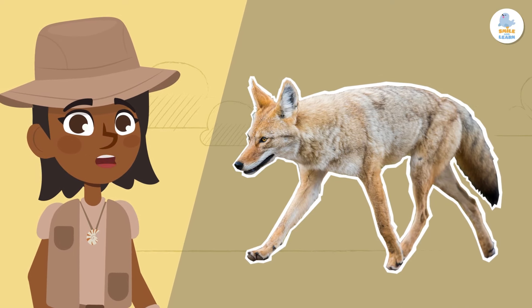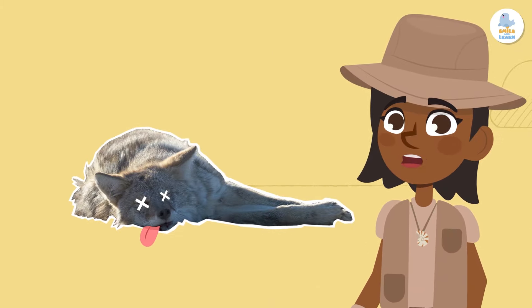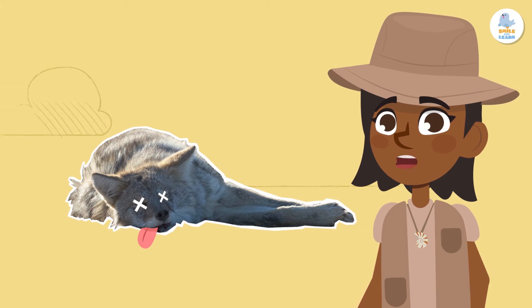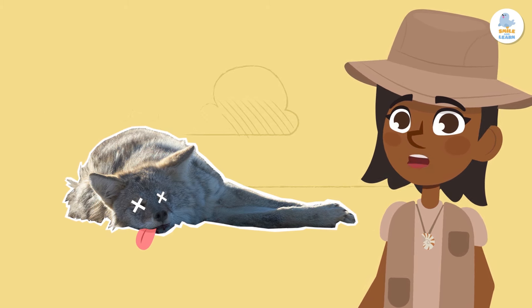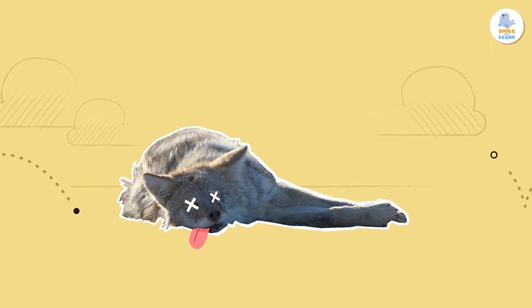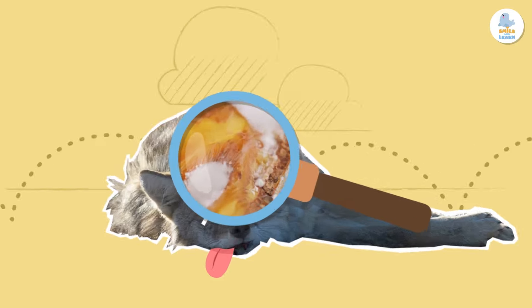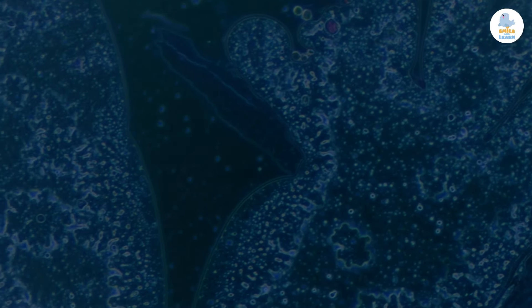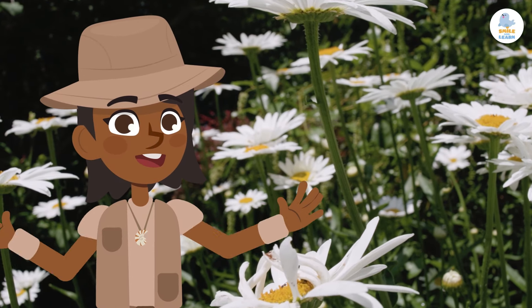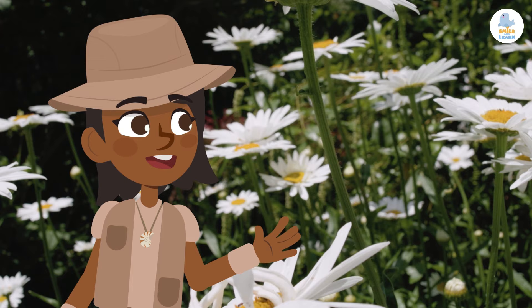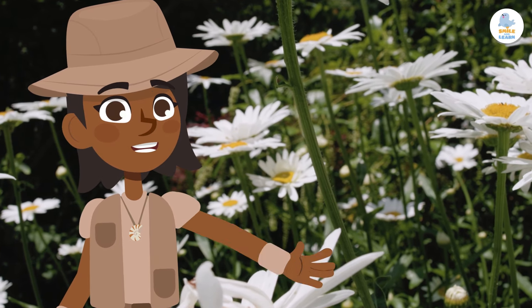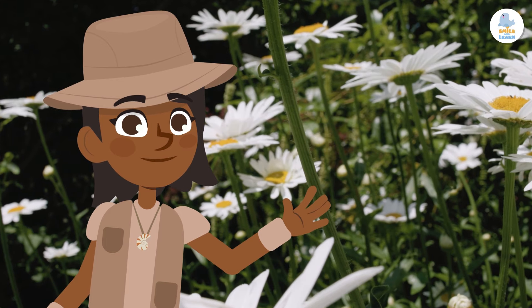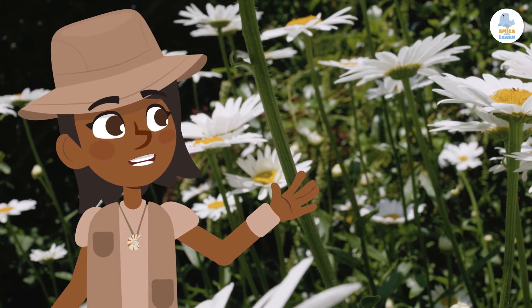Now this story gets a little sad, but it's something that happens to all living things. After a long and happy life, our coyote dies. But don't worry — this is when things get interesting! Now it's time for the bacteria and fungi to do their job. We can't see them, but they're everywhere. They eat the coyote's body, and when they do, they turn it into nutrients that plants can use to make their own food. Amazing, right? And so the food chain starts again.